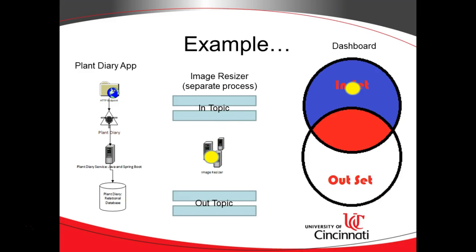Now, separately, the image resizer also subscribes to this in topic, and it also gets a copy of this object. So, it does its resizing, which might take a few moments. When it's finished, it essentially confirms that the resize is complete by publishing this object on the out topic. Because it's a topic, we can have multiple subscribers again, and one of the subscribers is our dashboard. So, this object now goes to our out set as well, and remember that in a set, items have to be unique.